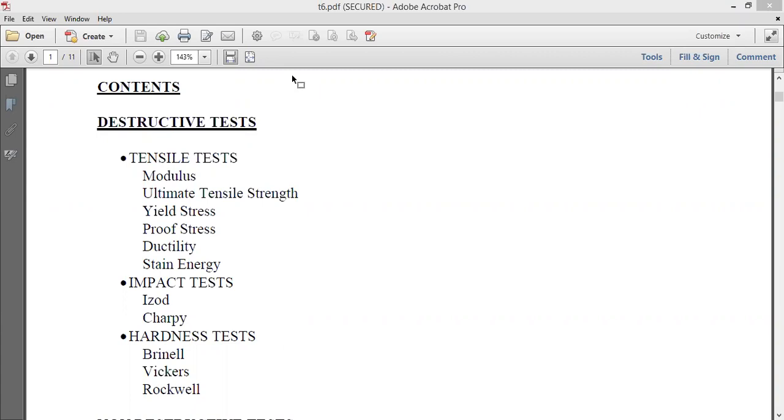Okay, so the tests that we looked at last time are known as destructive tests. Because in these tests, you're actually tampering with a specimen. You get the material that you intend to use, prepare a specimen according to standard, and then test it in the appropriate machines to get the required results. Whether it's a hardness test, tensile test, or impact test. With tensile strength, it will be stretched until it breaks. With impact, you'll be cutting across. So in all these tests, you're actually breaking the piece.